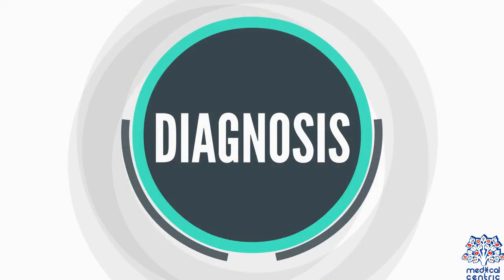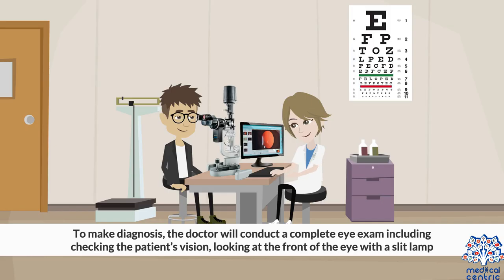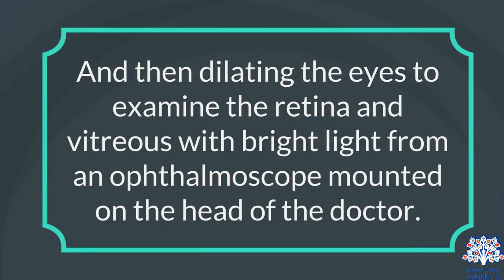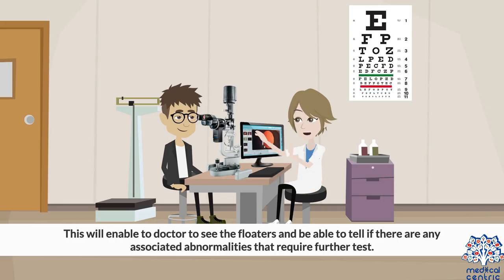To make a diagnosis, the doctor will conduct a complete eye exam, including checking the patient's vision, looking at the front of the eye with a slit lamp, and then dilating the eyes to examine the retina and vitreous with bright light from an ophthalmoscope mounted on the doctor's head. This will enable the doctor to see the floaters and determine if there are any associated abnormalities that require further testing.